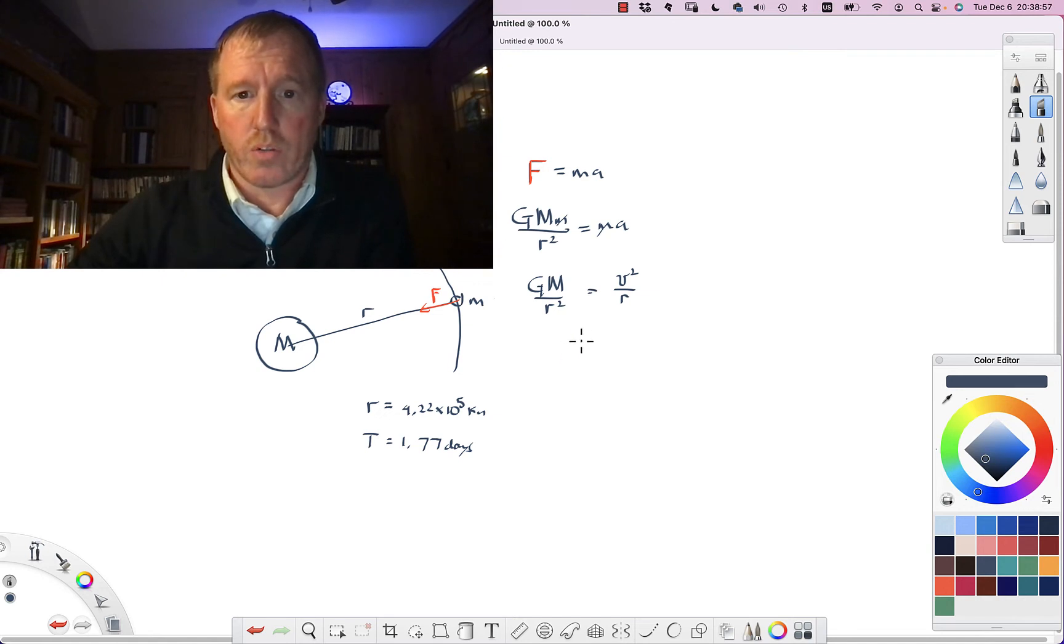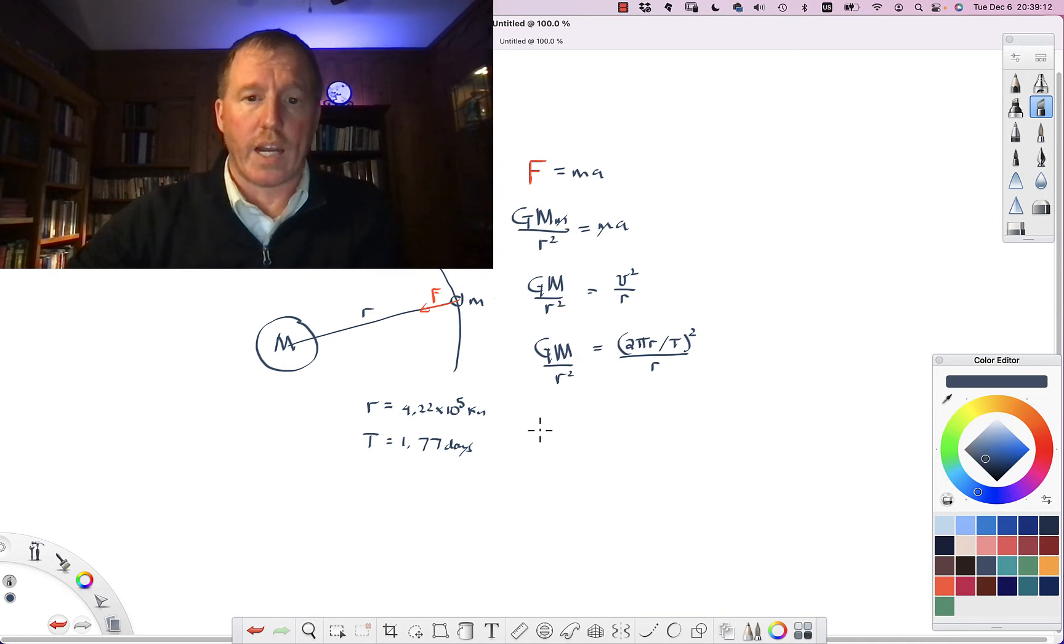And so what we can do is its velocity is going to be equal to the distance that it travels divided by the time it takes to go around. So we'll go like this, and that's G times M over r squared.